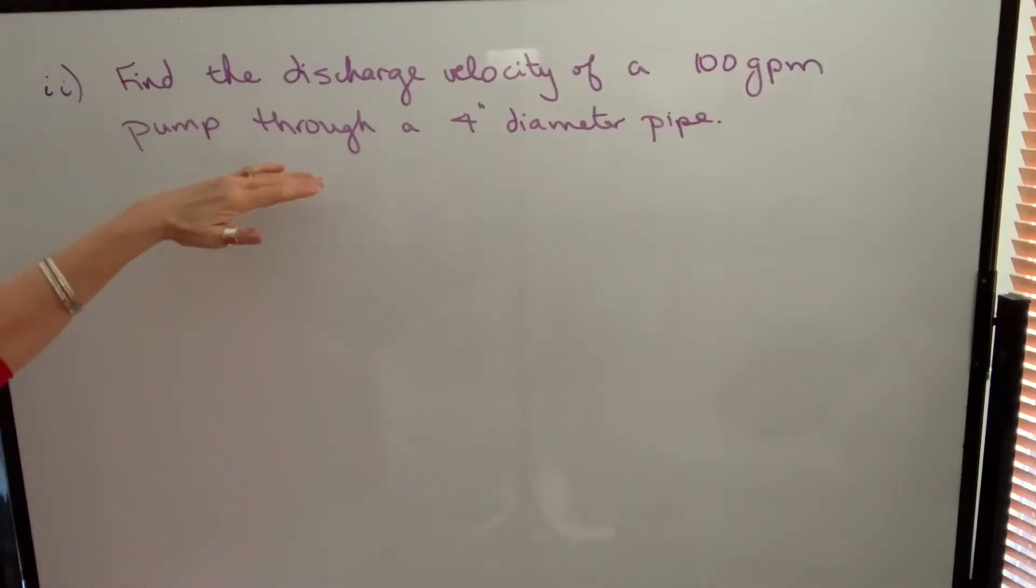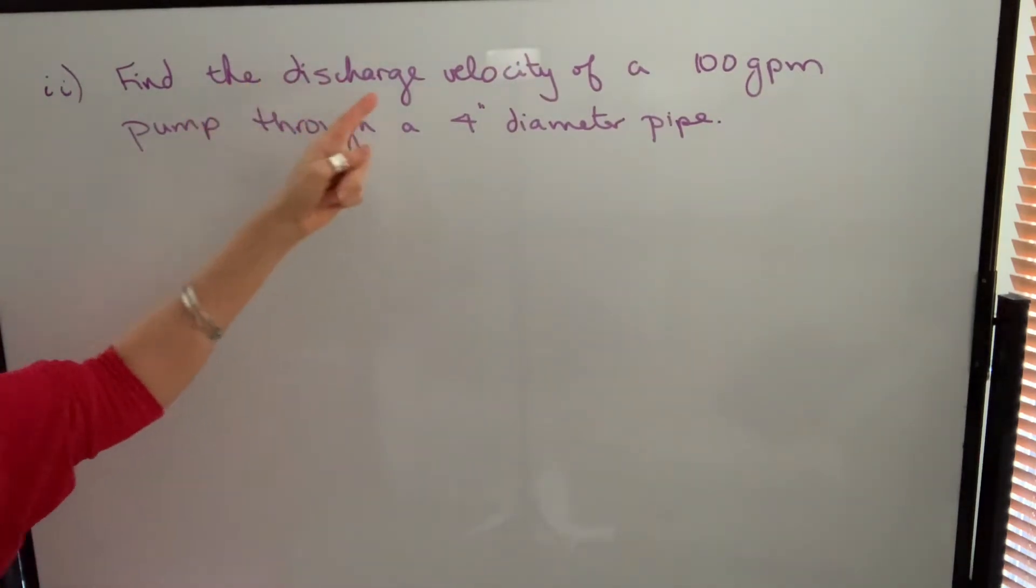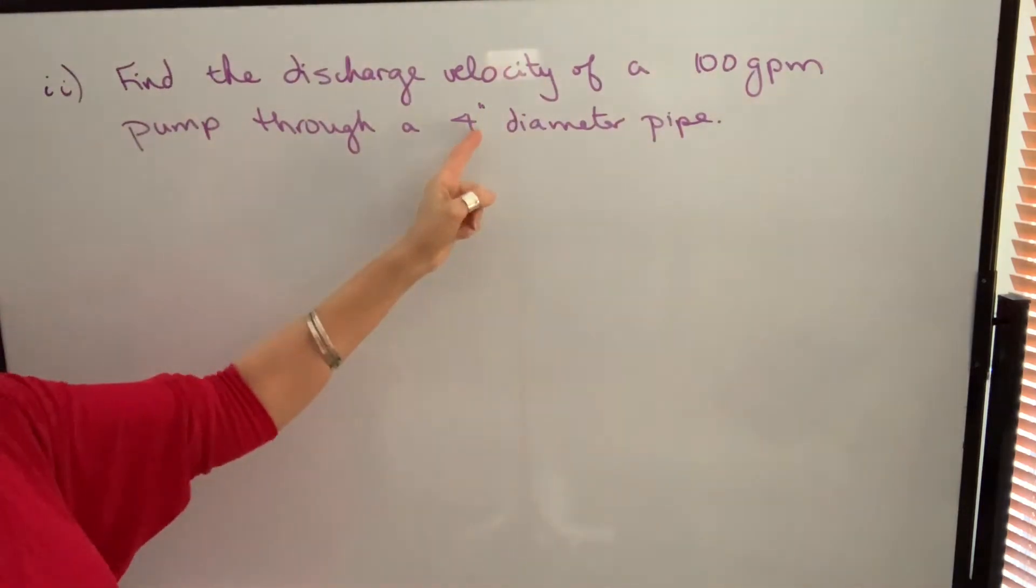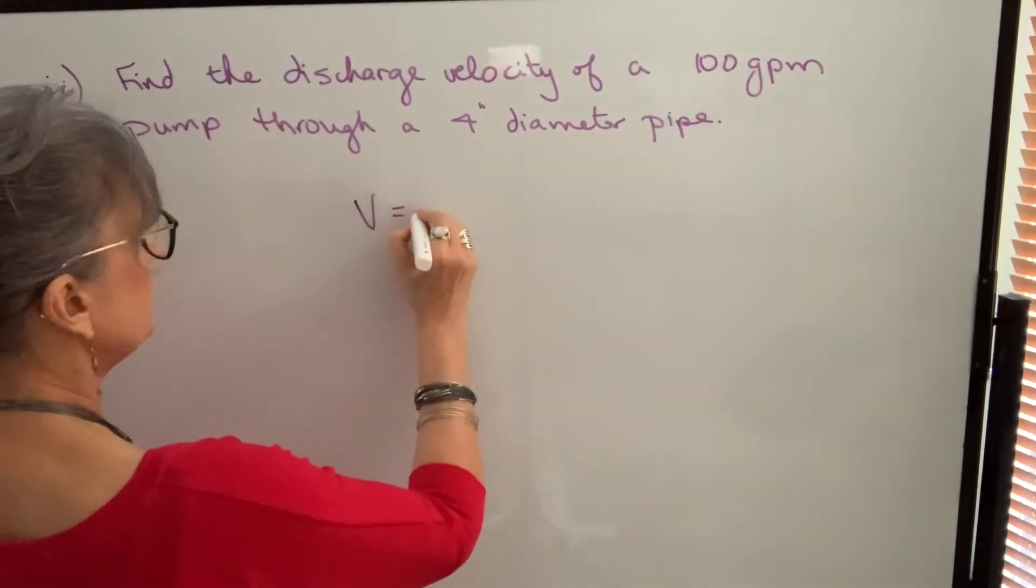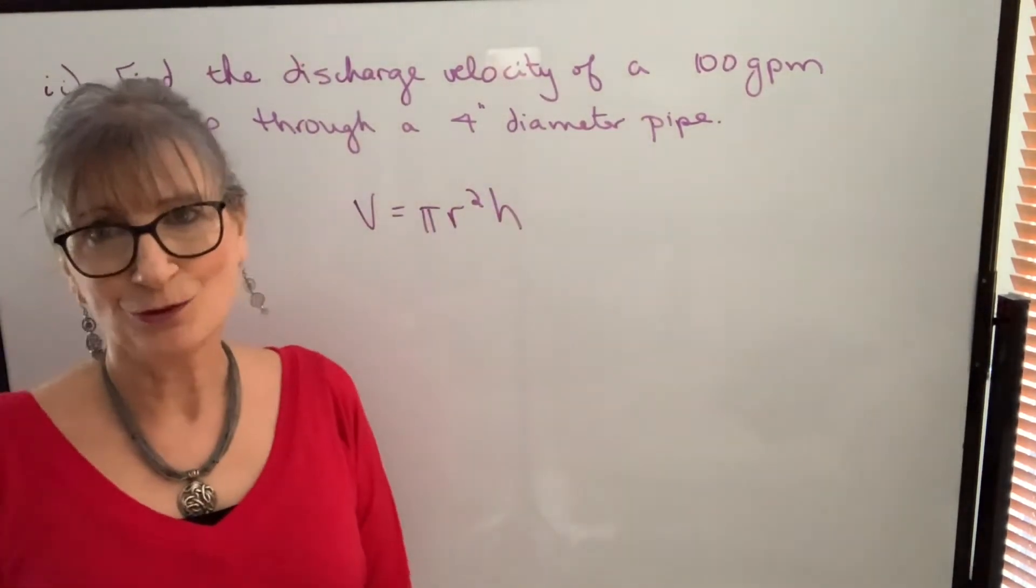This is probably the most common question you're going to encounter with fluid velocity, where you're asked to find the discharge velocity when you know the pump capacity and you know the pipe size. So again, we're going to be using our volume formula.